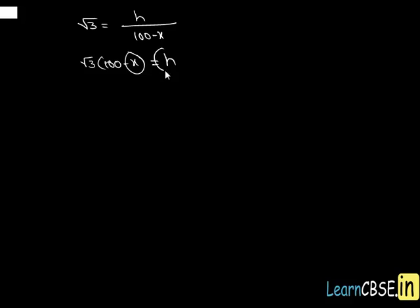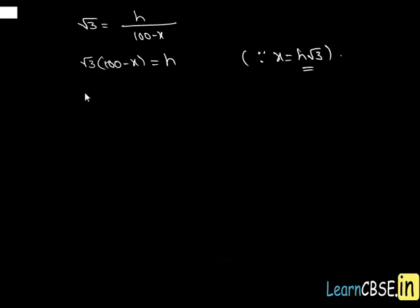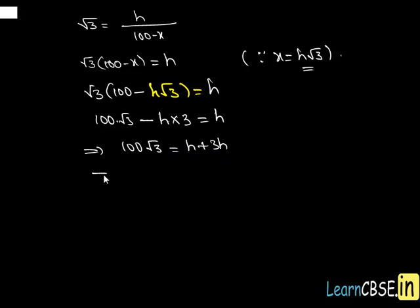We have two unknowns X and H, so we eliminate X by substituting X equal to H root 3 into the second equation: root 3 times (100 minus H root 3) equals H. Distributing root 3 gives 100 root 3 minus 3H equals H. Moving 3H to the right-hand side: 100 root 3 equals 4H. Dividing both sides by 4, we get H equal to 25 root 3.